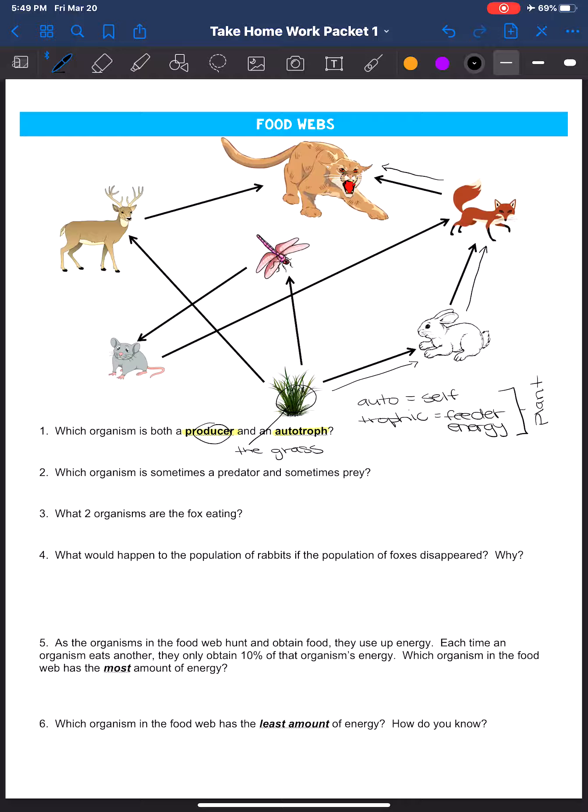Producer is another word for autotroph. Which organism is sometimes a predator and sometimes prey? When I think of predator, I'm going to think of something that hunts for food or eats another organism. When I think of prey, I'm going to think of something that is eaten by a different organism. The mountain lion—nothing in this food web is eating the mountain lion, so I can kind of cross him off. If I come down to the lower level and look at the mouse and the rabbit, the rabbit is eating the grass, and that's not really a predation thing. The rabbit is eaten by the fox, so the rabbit would be considered prey.